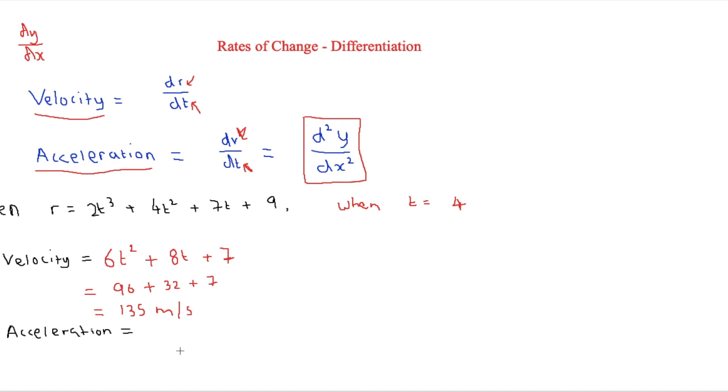So then acceleration—what you have to do is you have to find the second derivative. So we have the first derivative here, and the first derivative is this. So then we just have to differentiate this again.